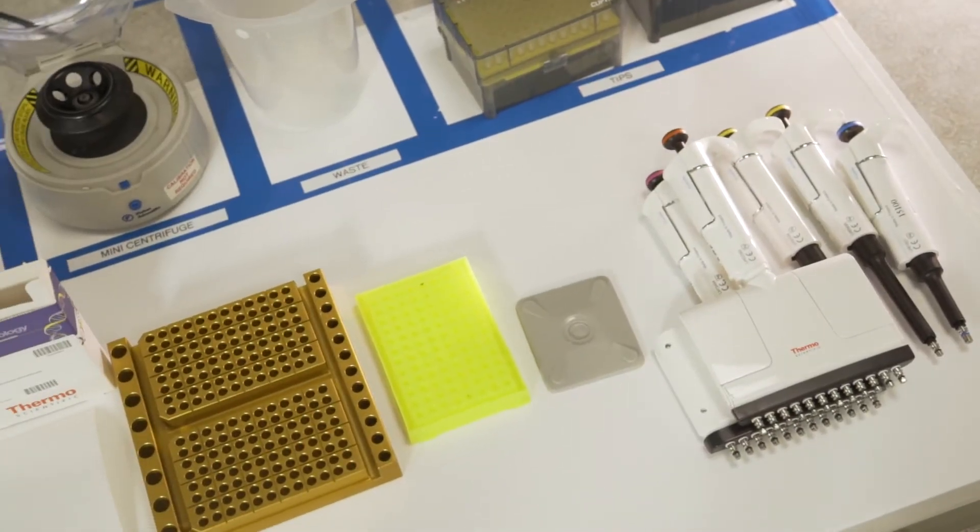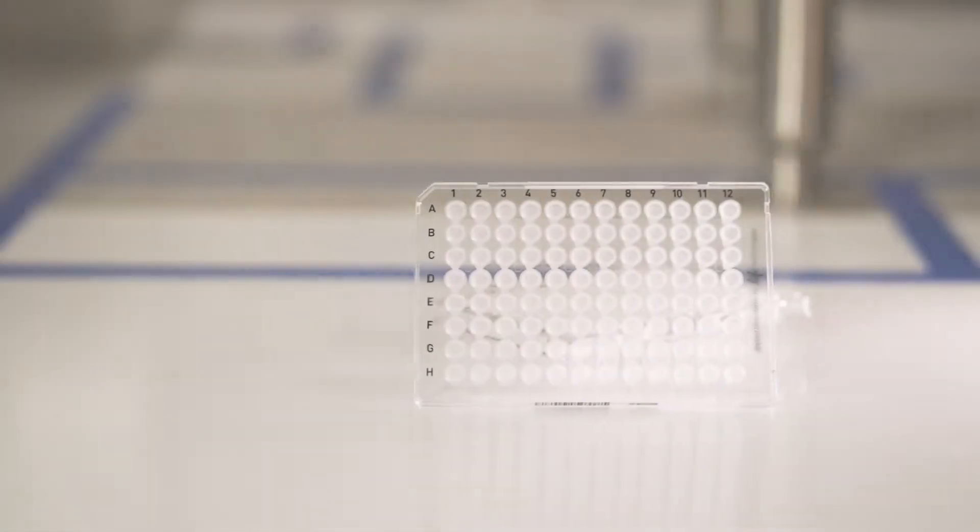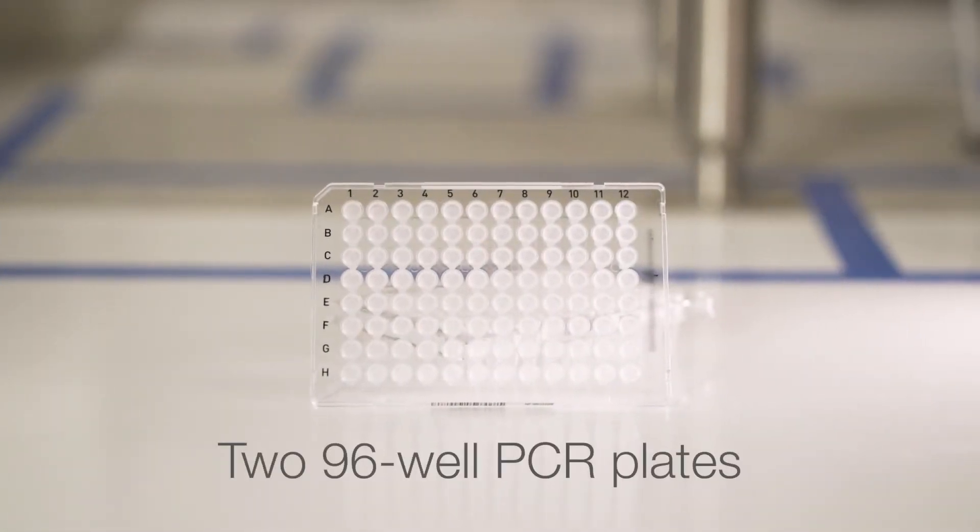You'll need the following items to run your assay: two 96-well PCR plates—one will only be used as a working plate.